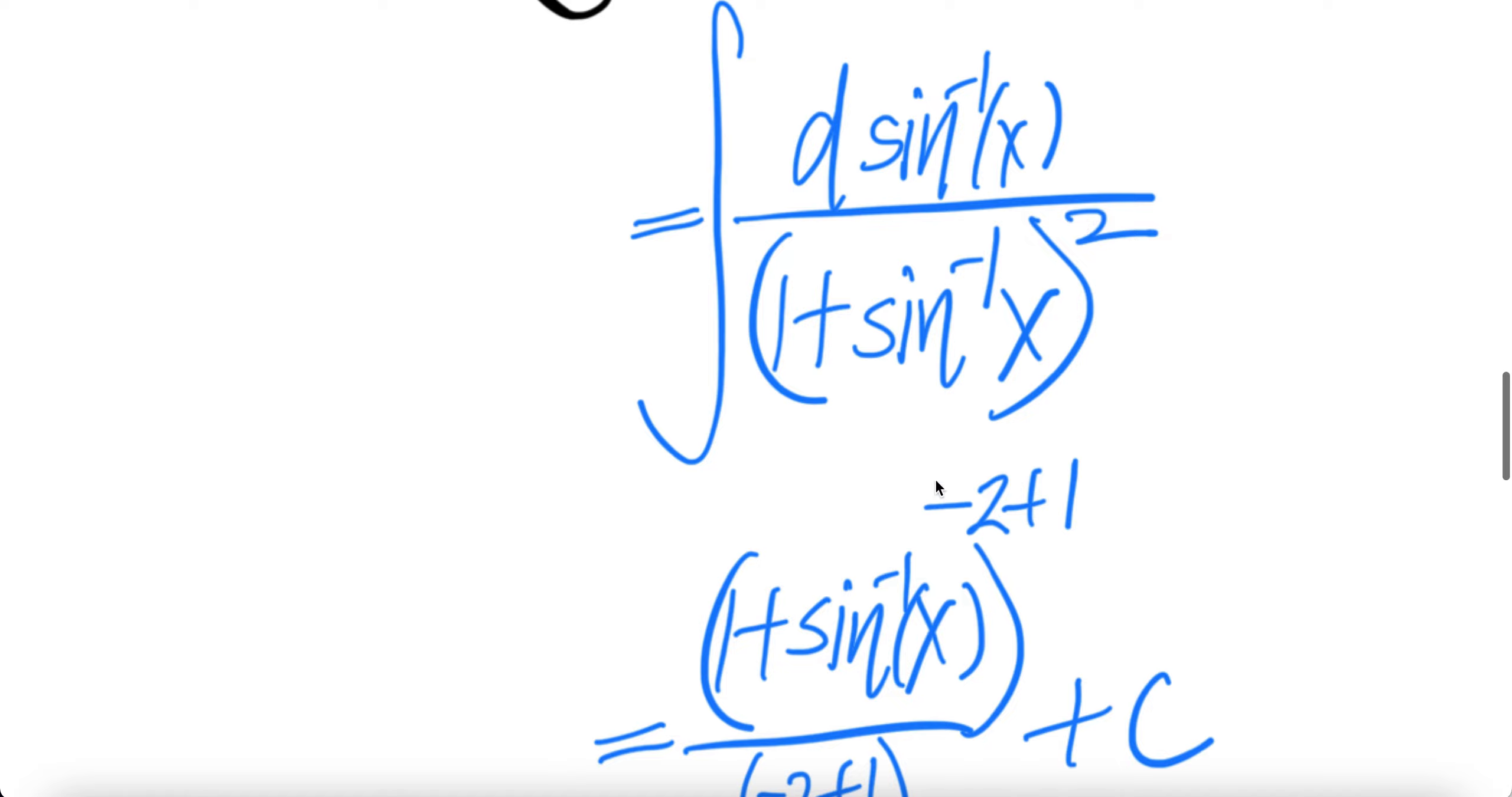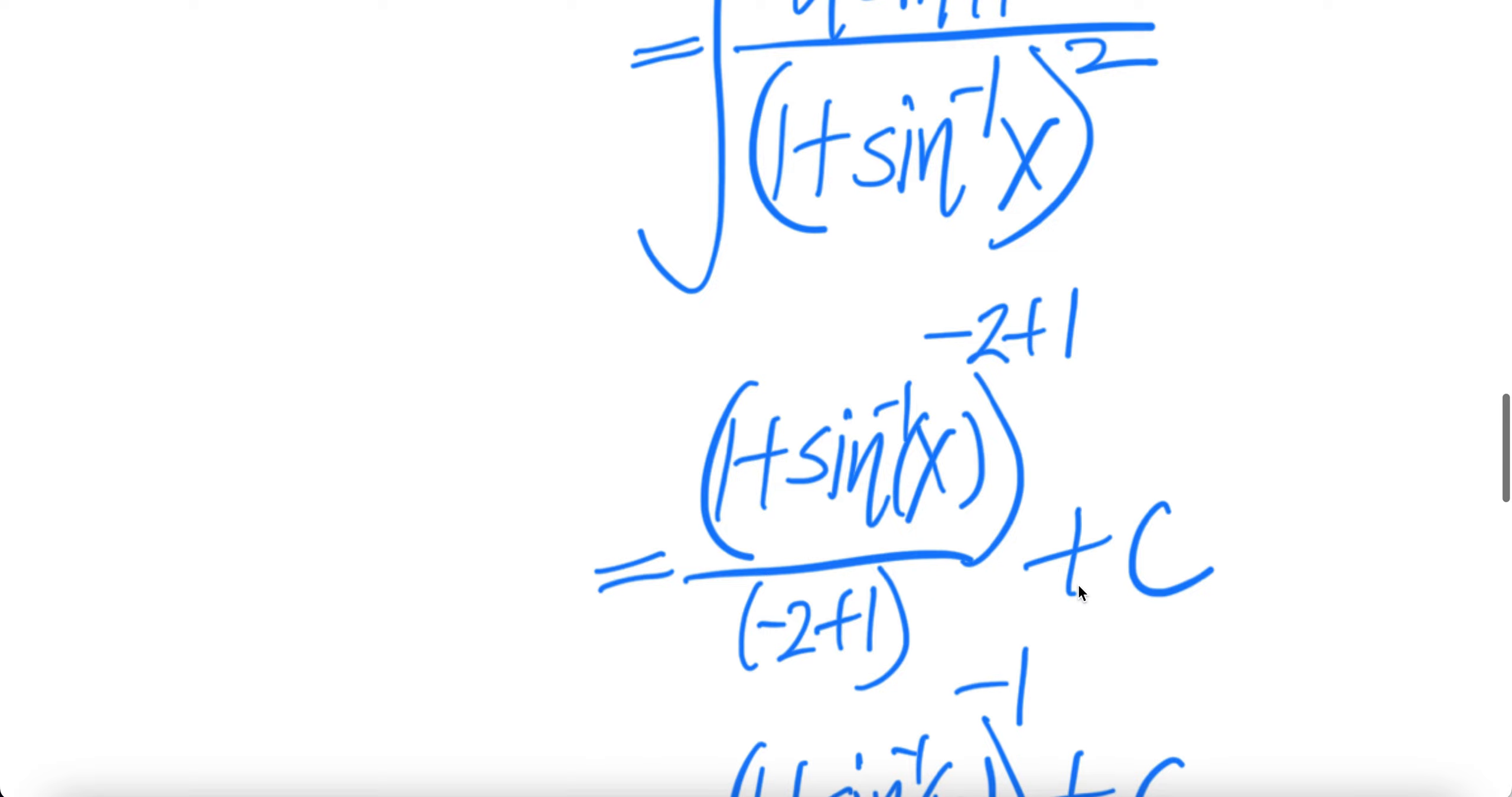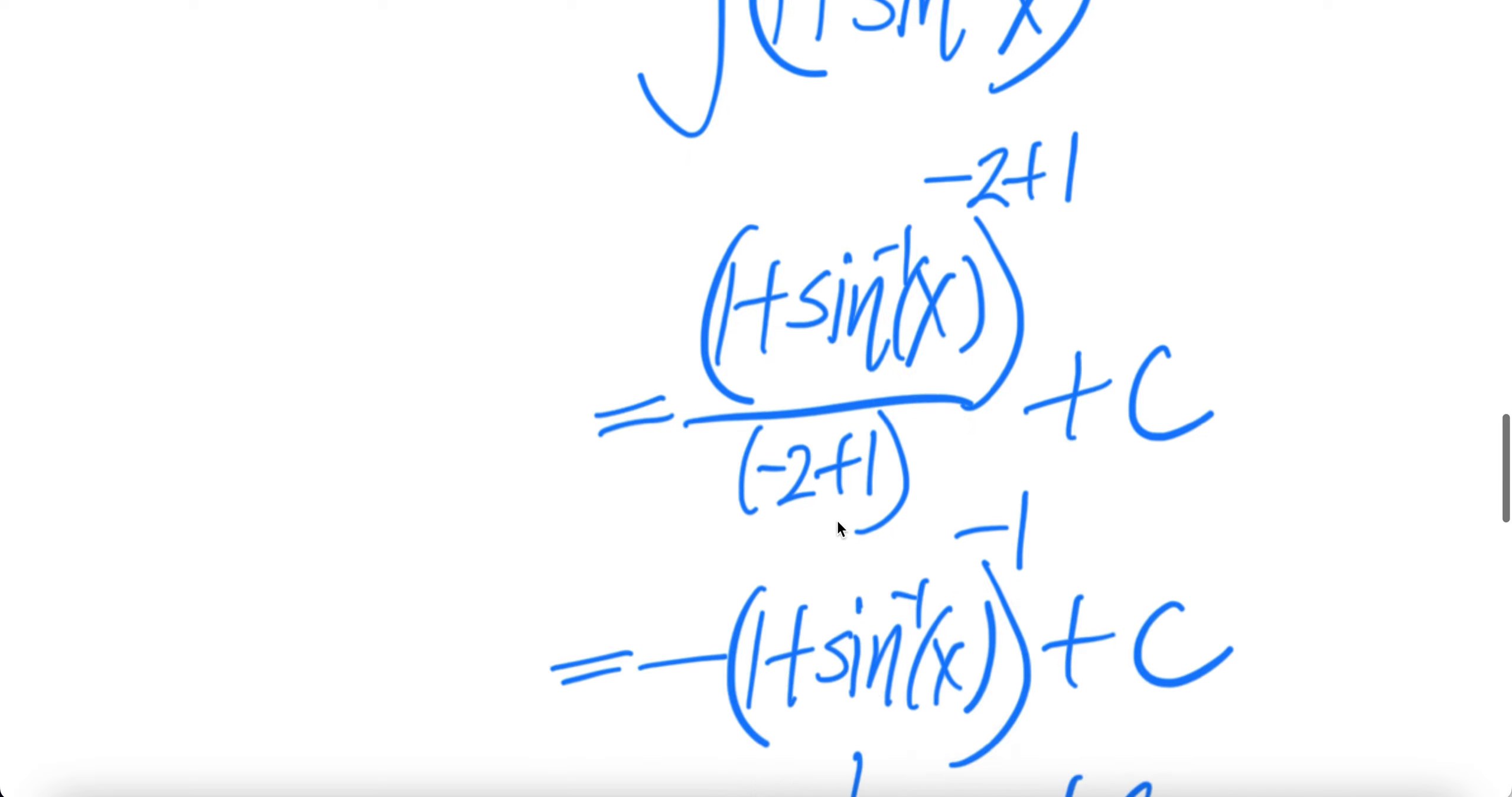Therefore we need to add 1 here when we are taking the integral and write the same thing downstairs plus 1. Minus 2 plus 1 is minus 1, up minus 1 downstairs.